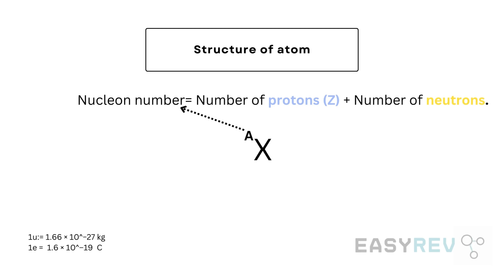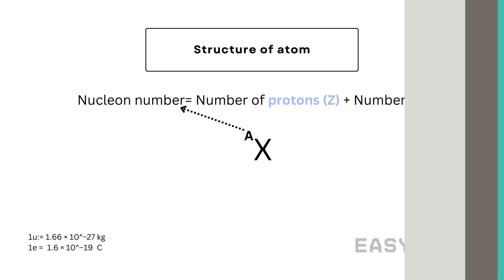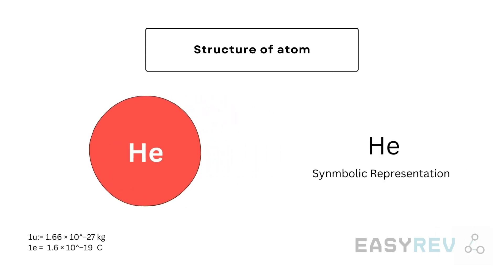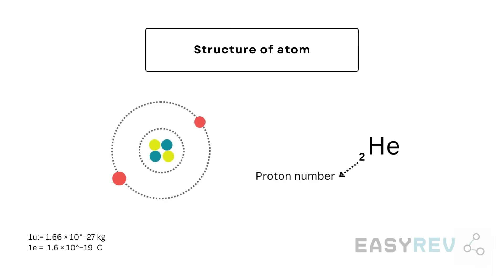Now let us apply this to a realistic example of helium. He is its symbolic representation, and its proton number is two, meaning the nucleus of this helium atom should contain exactly two protons. And if we consider a neutral atom, in that case the first shell outside of this nucleus should contain two electrons.